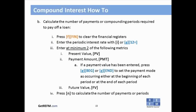To calculate the number of payments or compounding periods required to pay off a loan: first clear the financial registers with orange F and FIN. Then enter the periodic interest rate with either I or G/12÷. Next, enter at minimum two of the following: the present value, the payment amount — specifying whether payments occur at the beginning or end of each period using the blue keys — or the future value. Then press N to calculate the number of payments or periods.